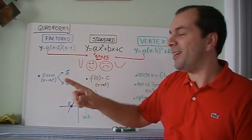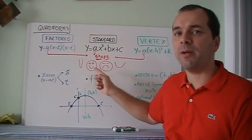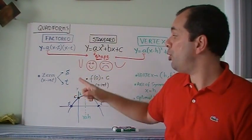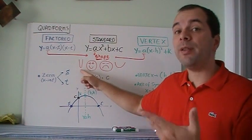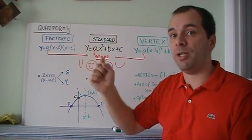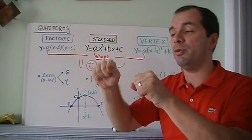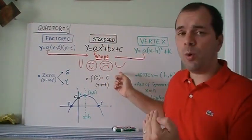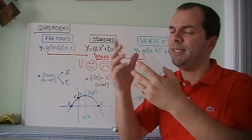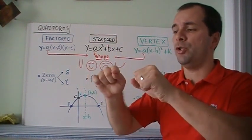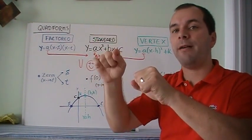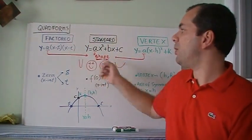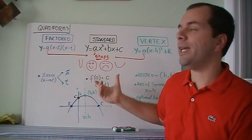If the 'a' value is positive, the parabola opens up. If it's negative, it opens down. If the 'a' value is bigger than 1, it's going to be a stretch — you multiply by a bigger number so it goes up faster and gets skinnier. If 'a' is between 0 and 1, it's a compression — for example, half of 4 is 2, so the parabola gets wider.